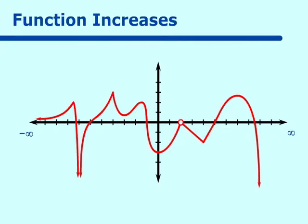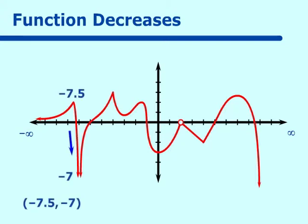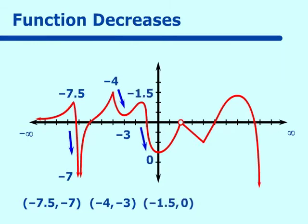What are the intervals over which our function decreases? They are from negative 7.5 to negative 7, negative 4 to negative 3, negative 1.5 to 0, 2 to 4, and 7 to infinity.